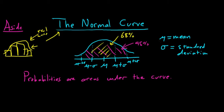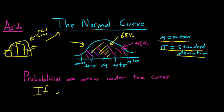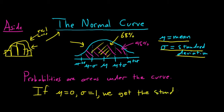Given a mean and a standard deviation, we have a curve. Obviously, if you change the mean and standard deviation, the curve is going to change. There is one specific case that we care about: if the mean is equal to 0 and the standard deviation is equal to 1, we get something called the standard normal.